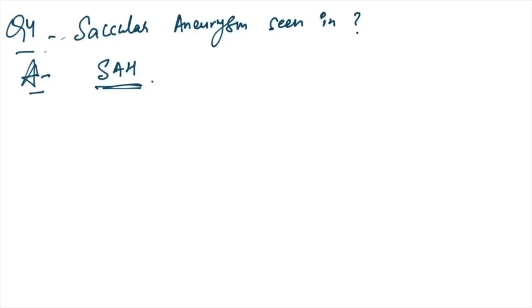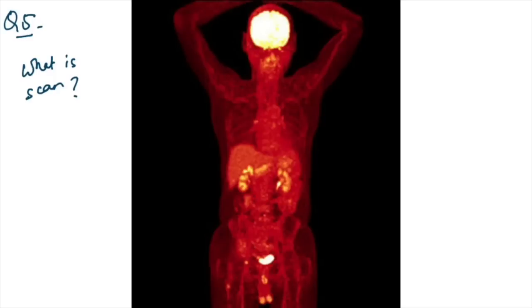Saccular aneurysms are seen in which disease? Subarachnoid hemorrhage is the answer. This scan, this image was given - orange and red appearance of the whole body with some yellowish parts. Which scan is this? This is PET-CT scan, positron emission tomography. The answer is PET-CT.